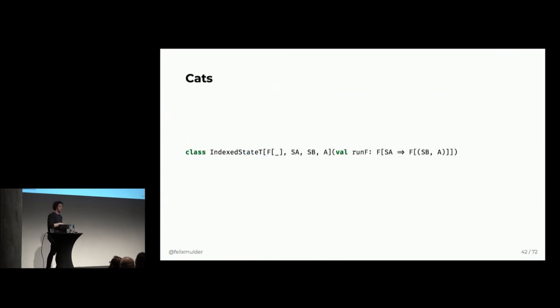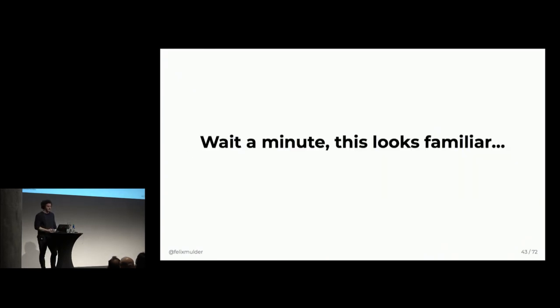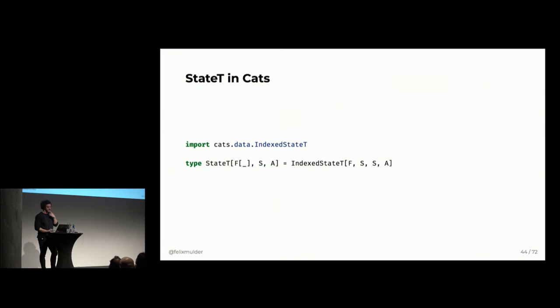And the index state in cats looks the same as this if you squint a bit, right? There are some differences, like the function, the run function here is wrapped in some f. But they're almost equivalent to the naive implementation we just wrote, other than this f here, as well as the extra type parameter here. So, this does look familiar to what we had before, right? So, hmm, what could this be? Well, another type alias, of course. So, state t is actually an index state. So, essentially, it's an index state that doesn't transition into a different type of state. So, that's pretty cool.